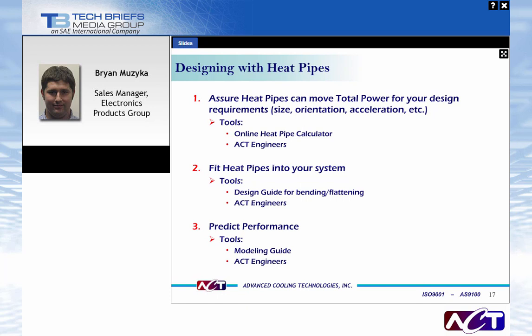There are three main steps to designing heat pipes within your system. The first is to assure that heat pipes can move the total power for your design requirements — inputting size, orientation, and other parameters to output the capillary curve. ACT has created an online heat pipe calculator where engineers can calculate capillary limits and pick the appropriate number and size of heat pipes. The second step is fitting heat pipes into your system, with a design guide covering bending, flattening, and integration techniques. The third is performance predictions — modeling guidelines are available online to help engineers model heat pipes for their system parameters.